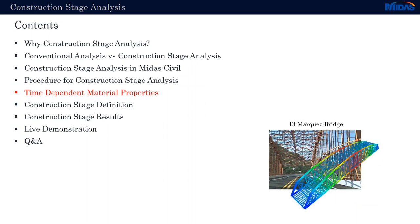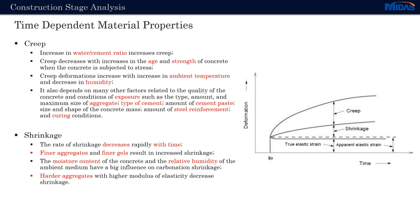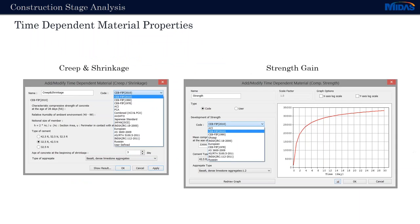Now let's look a bit into time-dependent material properties. Many factors can affect creep and shrinkage — these include water-cement ratio, the age or strength of the concrete, ambient temperature or humidity, exposure classes, aggregates, and moisture content. Most of these can be considered in MIDAS Civil, and the definition is straightforward. It can be done for both creep and shrinkage and strength gain, either by choosing one of the available design codes or by manually defining the properties.